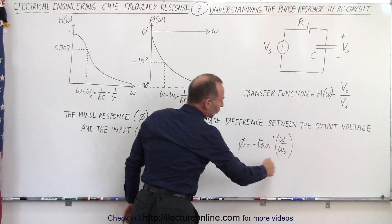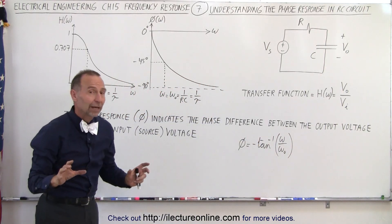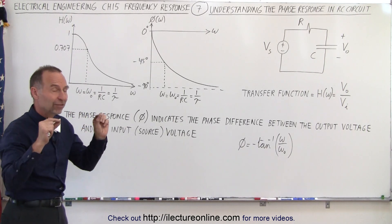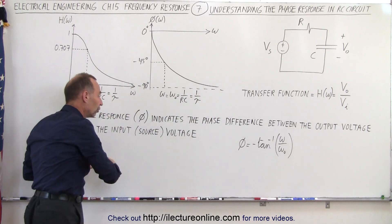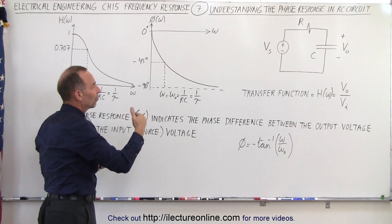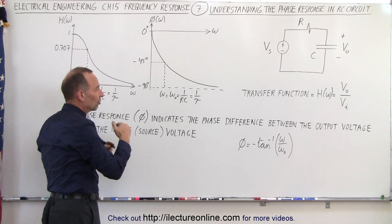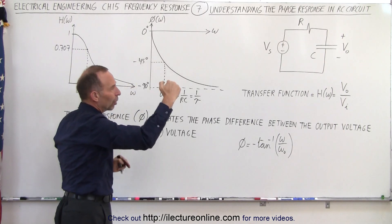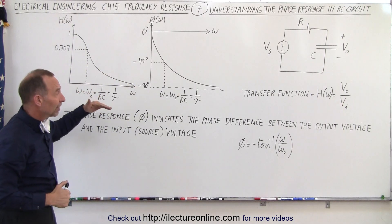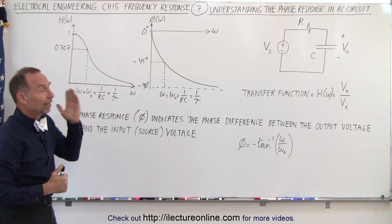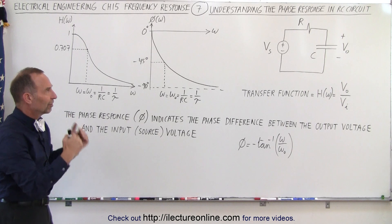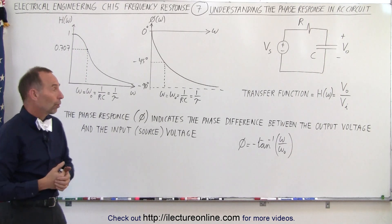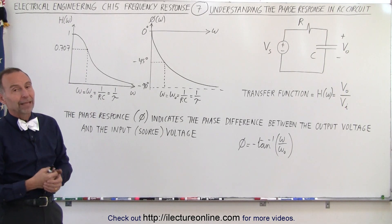This is very visible in the equation as well, but now you understand physically why there is a phase difference. The phase difference indicates the difference between the output voltage and the source voltage. The amount of phase difference depends on how fast the input voltage changes — if it changes slowly, there is a very small phase difference; if the frequency is very high, there is a large phase difference, up to 90 degrees as frequency approaches infinity. That's how we understand the concept of phase difference, or phase response, in a circuit described by a transfer function like this.